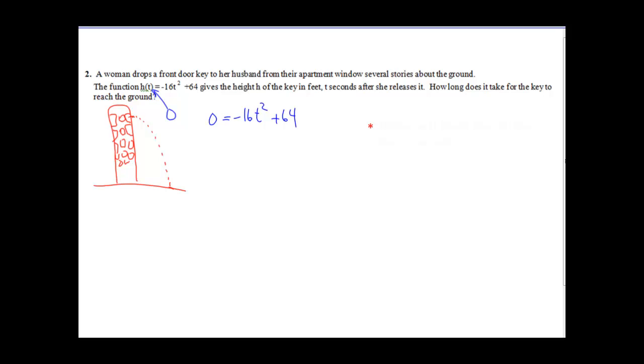What we want to do is we have a quadratic, let's see if we can factor. Well, factoring, if you remember, we need to take out the greatest common factor. Does 16 go into 64? It does. So if I take a negative 16 out, I'm left with t squared minus 4. Think of your factoring skills.